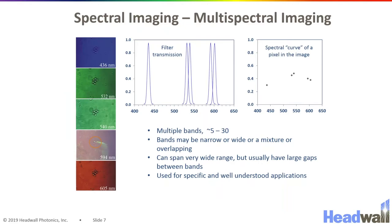Another related technology is multi-spectral imaging, which instead of having three bands like an RGB image, can have somewhere in the range of 5 to 30 spectral bands with different ranges of spectral filters in those bands.